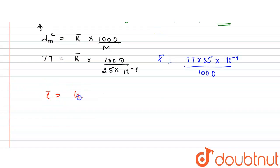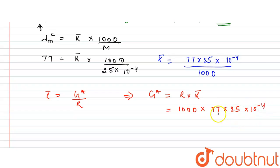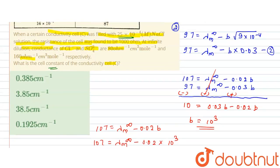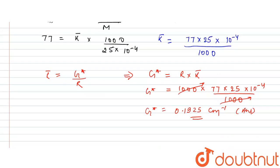Since κ = cell constant / resistance, the cell constant = resistance × κ = 1000 × (77 × 25×10⁻⁴ / 1000). The 1000s cancel, giving cell constant = 77 × 25×10⁻⁴ = 0.1925 cm⁻¹. Checking the options, option D is correct.